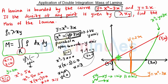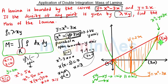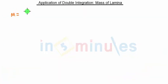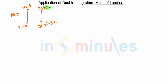We will move this strip from left towards the right-hand side to cover the entire region. X goes from 0 (the lower limit) to 5 (the upper limit). So we get mass equal to the integral where x is going from 0 to 5, y is going from x² - 3x to 2x, and rho dx dy.